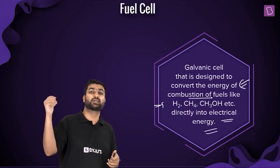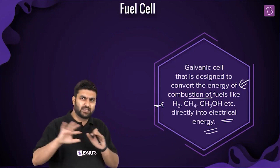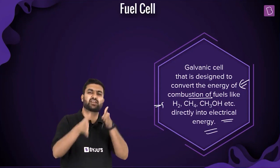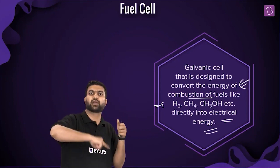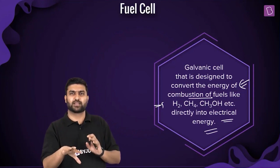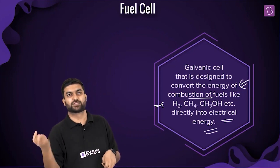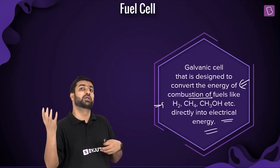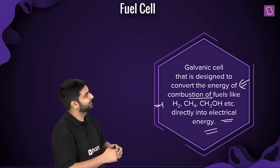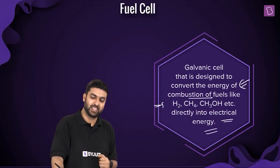The idea is to skip the intermediate step: earlier it was chemical energy → heat energy → electrical energy (via the turbine). Now we go directly from chemical energy to electrical energy. We use these fuels to create cells — and hence the name 'fuel cells.'